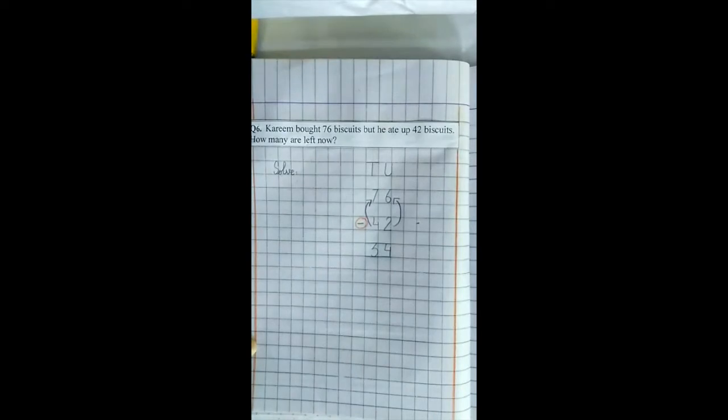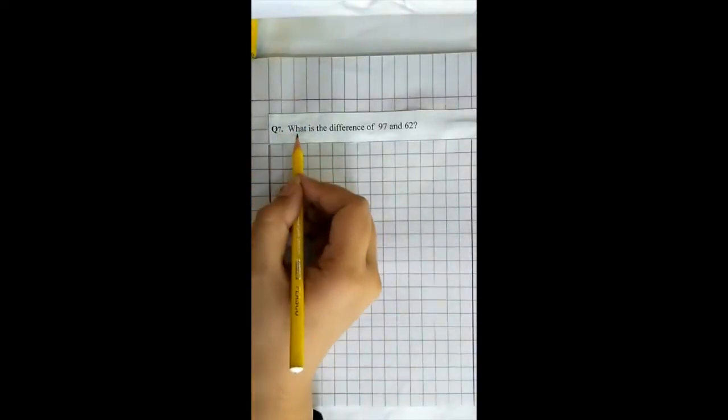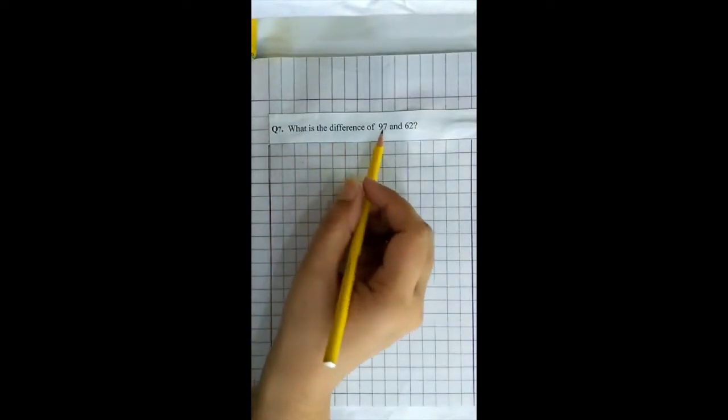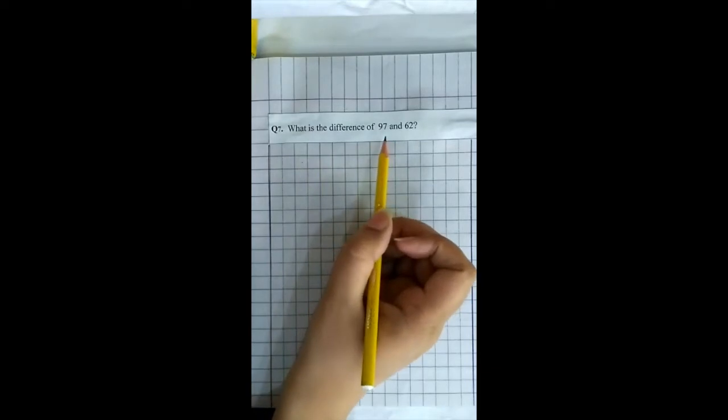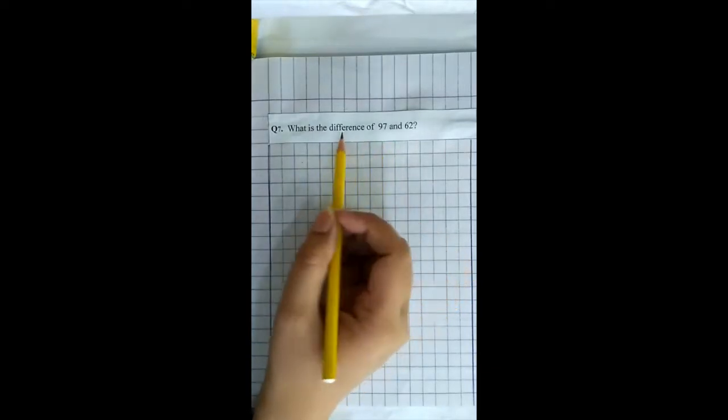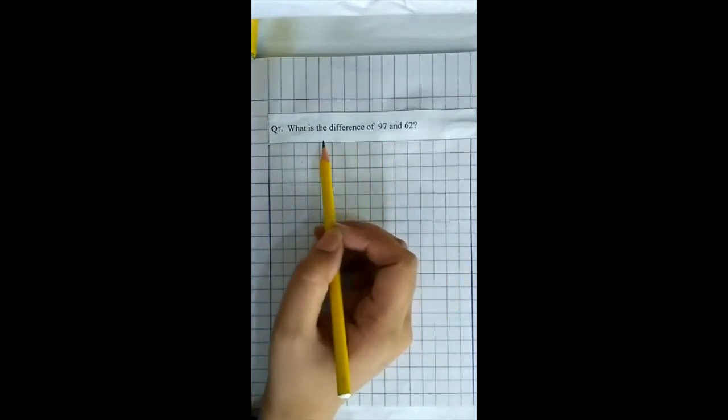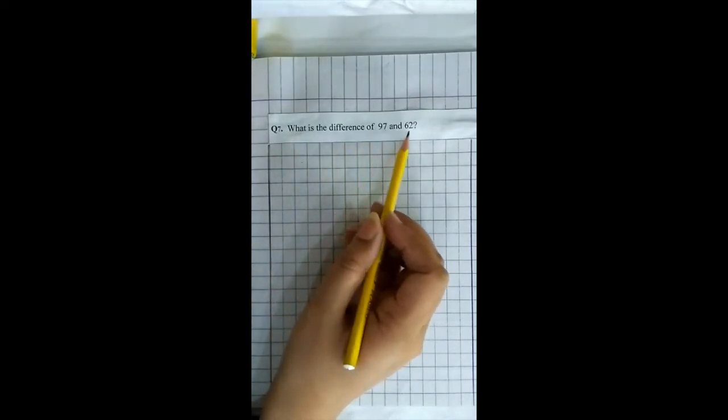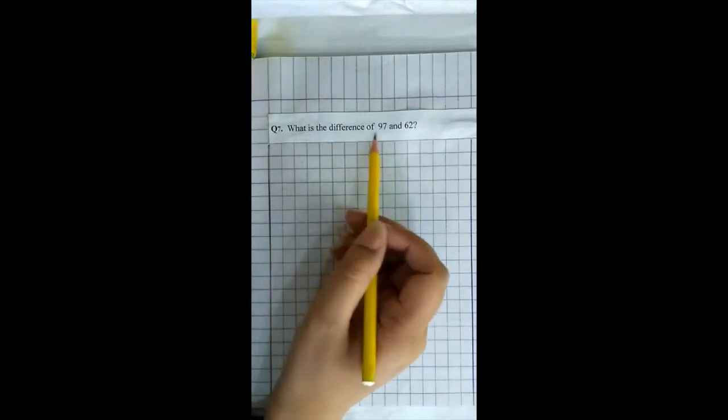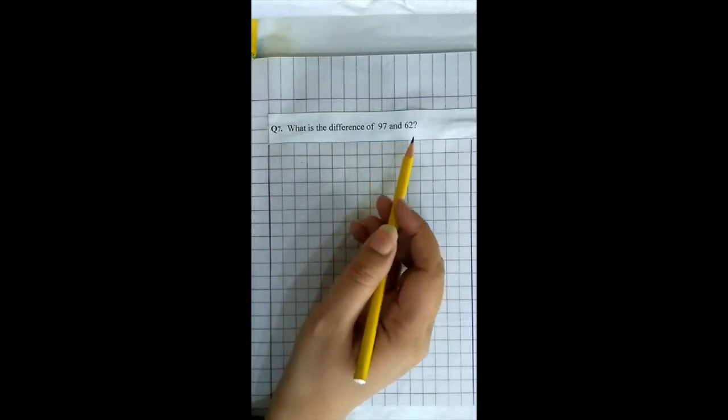Go to the next question one class. Now look at this question. What is the difference of ninety-seven and sixty-two? Do you find the clue word in this question one class? Yes. Difference of is a clue word. انہوں نے کہا ہے what is the difference of ninety-seven and sixty-two? کتنا فرق ہے ninety-seven میں اور sixty-two میں?